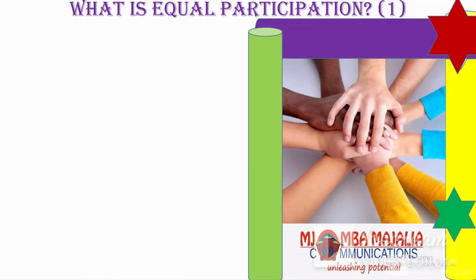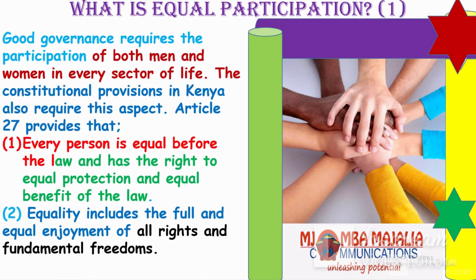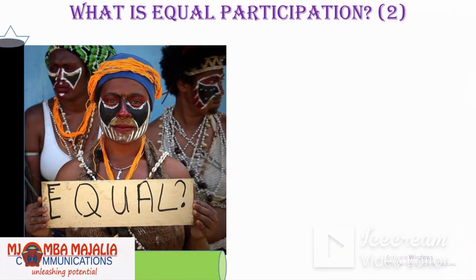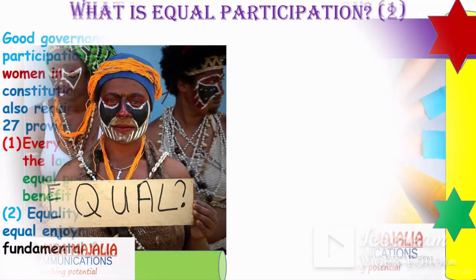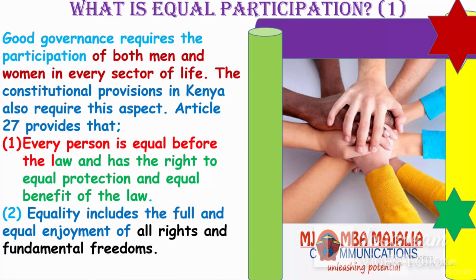We have a new president — what do you think in terms of governance? The second aspect of good governance in the Constitution: good governance requires the participation of both men and women in every sector of life — and that is Article 27 of the new Constitution. What does it provide? Every person is equal before the law.